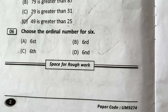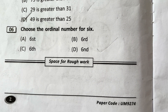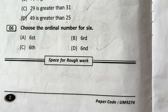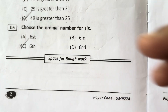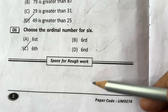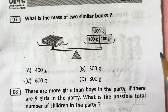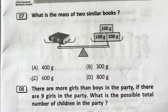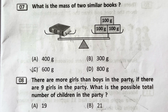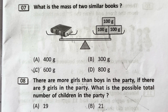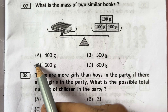Choose the ordinal number for 6. The ordinal number of 6 is 6th, that is option C. What is the mass of 2 similar books? One book is 300 grams, so 2 books means 600 grams. Answer is C.